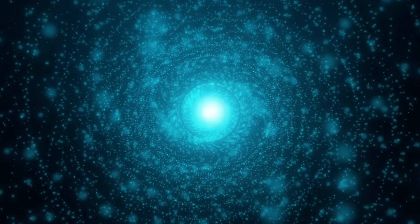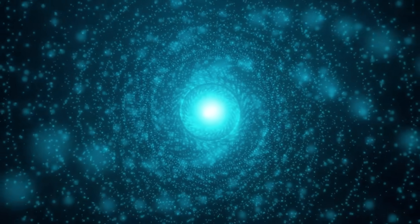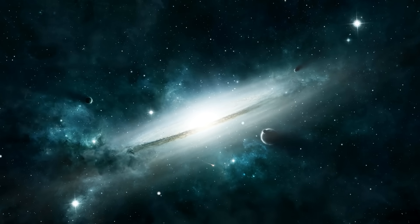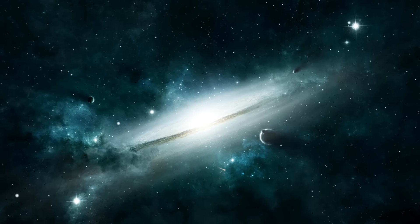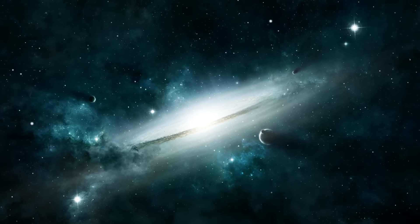When Webb switched to its mid-infrared camera, the readings grew even stranger. The background stars began to distort, stretching into arcs and spirals, as if reality itself were twisting around the object's gravitational field. One scientist whispered what everyone was thinking, but no one dared say out loud: it's looking back.